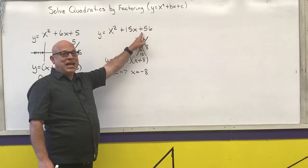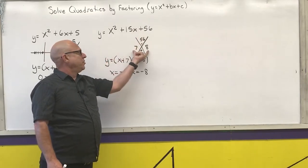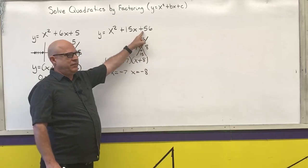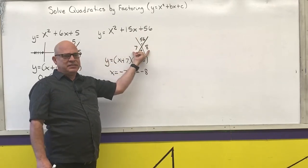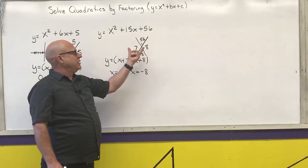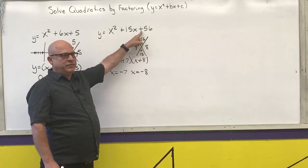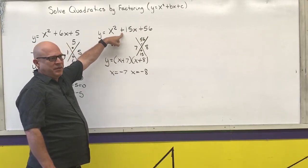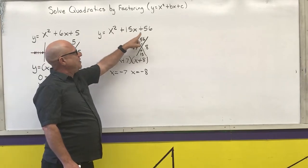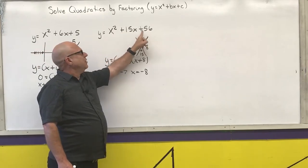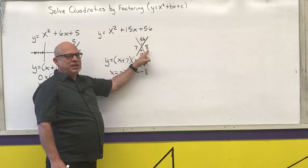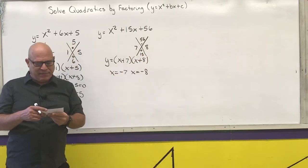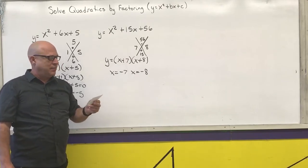If the last number is positive, both numbers must have the same sign. If the last number is negative, they must have opposite signs. When both signs are the same, they will match the sign of the middle number. When the signs are opposite, the sign of the middle number matches whichever number has the biggest absolute value. The next three examples will show these various combinations.